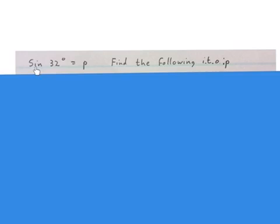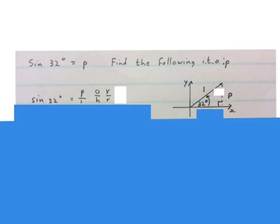Our question says sine 32 degrees equals P. Find the following in terms of P. We're not going to start with this yet. We're going to activate this part. The first thing you do is you rewrite sin 32 equals P over 1. Then you either use O over H from Sokatoa or you know that it's Y over R.